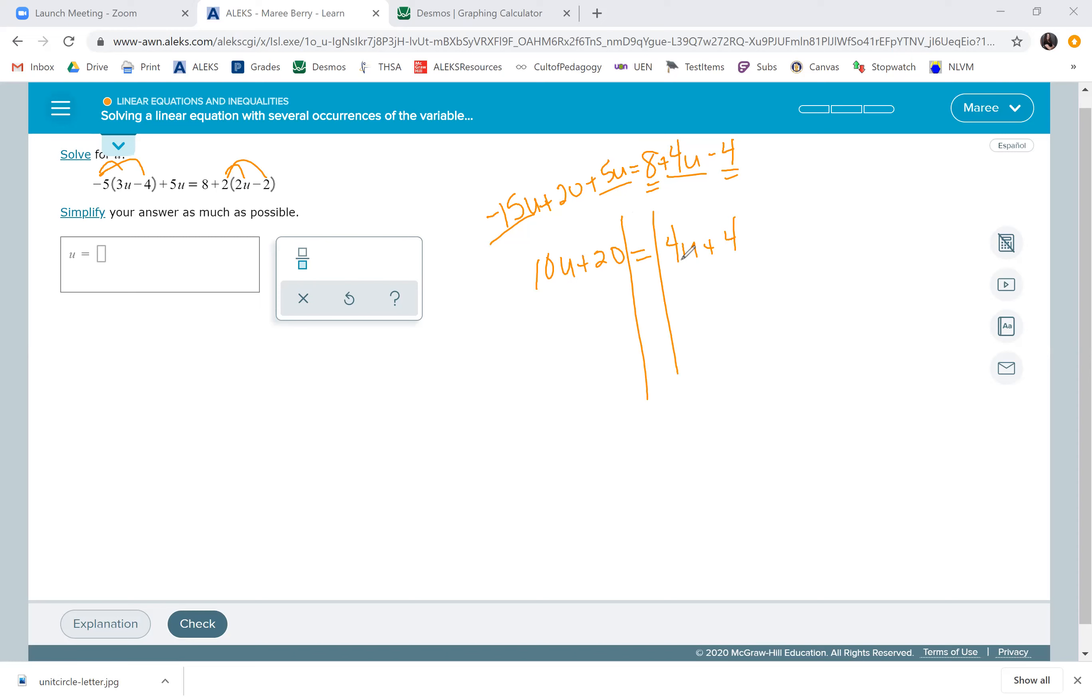Now I'm going to get the 4u on the other side by subtracting the entire term, and get rid of this 20 by subtracting 20 on both sides. I get negative 16 on the right, and on the left, 10 minus 4 is 6u. Divide by 6, and I get u equals negative... dividing both by 2, so negative 8 thirds.